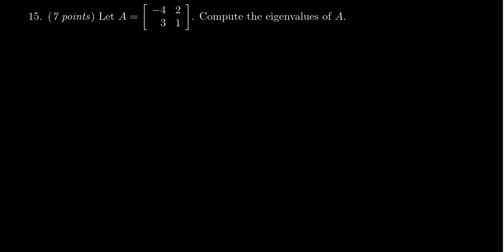In this video we present the solution to question number 15 from practice exam number three from Math 2270, in which case we're given a 2 by 2 matrix A = [-4, 2; 3, 1] and we're asked to compute the eigenvalues of A. So the first thing we need to do is compute the characteristic polynomial.